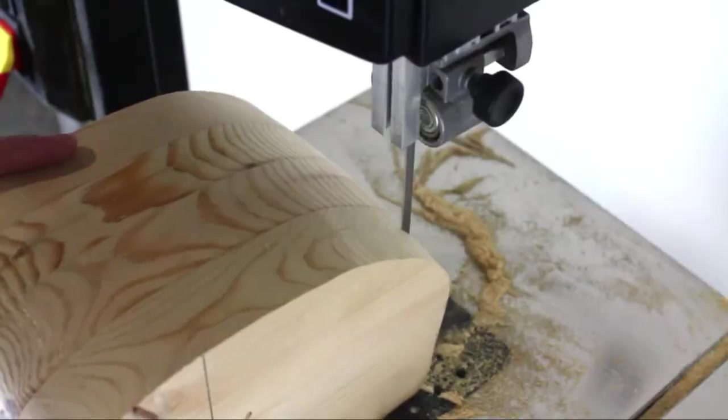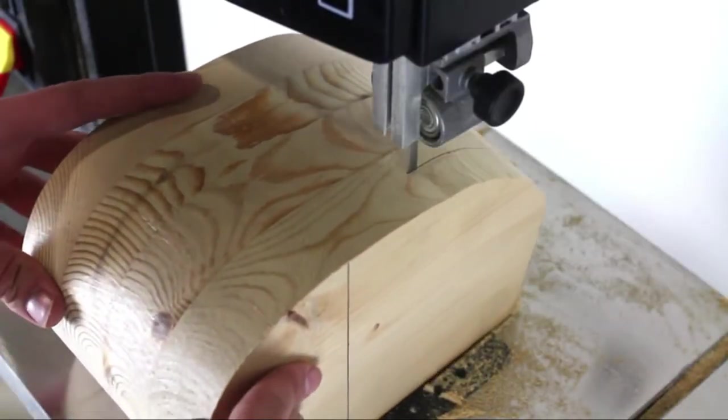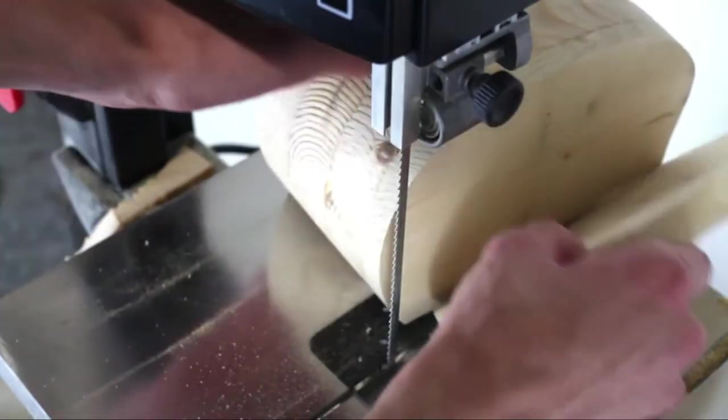Once you have cut out the box, the next step is to cut a flat piece off the back. Set this piece aside, as you will need to be gluing it back on at a later point in time.